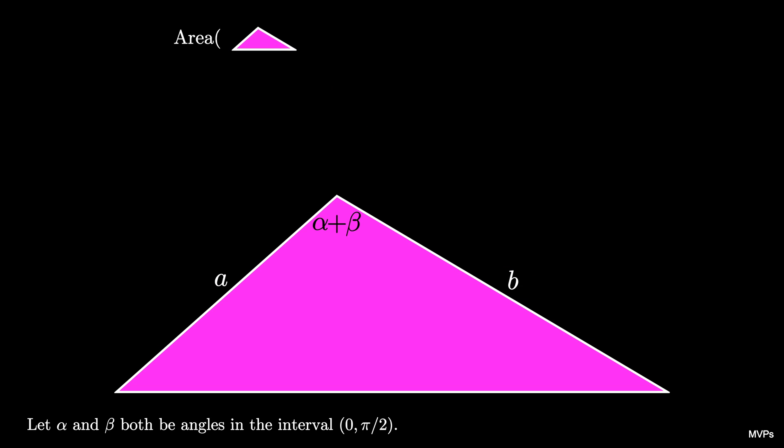The area of this triangle can be determined using the side-angle-side formula, and is thus (1/2)AB sin(α + β).